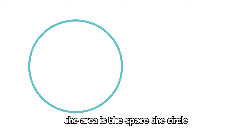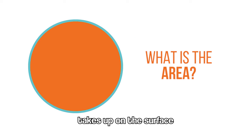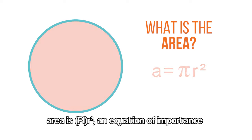The area is the space the circle takes up on the surface. Area is pi r squared, an equation of importance.